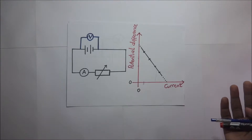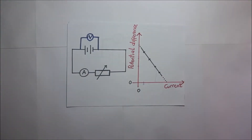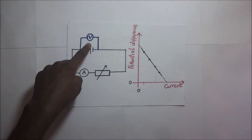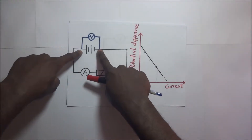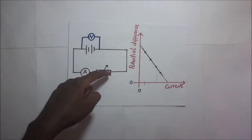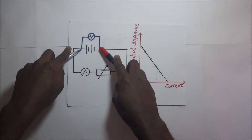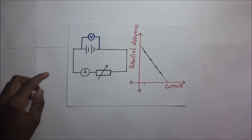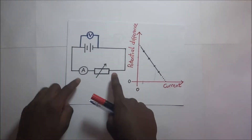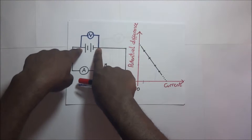When we adjust the rheostat, it will have different readings for different values of current. This means the potential difference across the terminals of a cell is not constant — it depends on how much current is drawn out. This potential difference across the terminals when current is being drawn out is what we call terminal potential difference. Terminal PD is the PD across the terminals of a cell in a closed circuit.